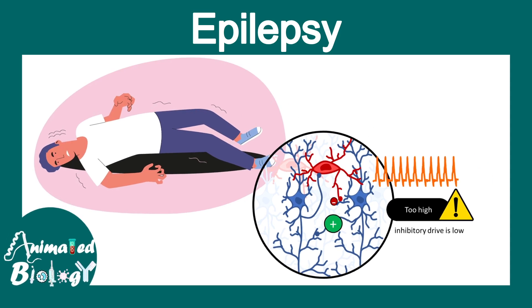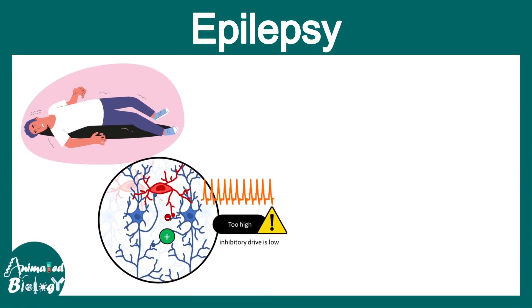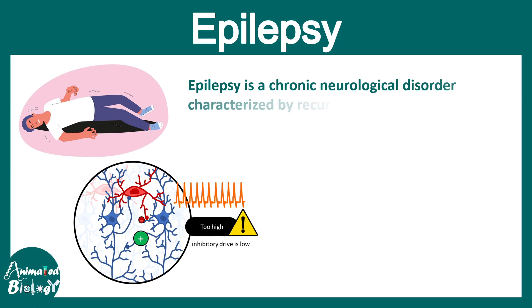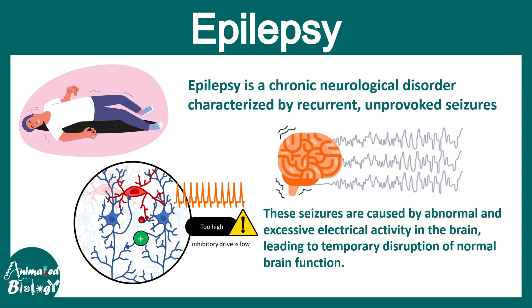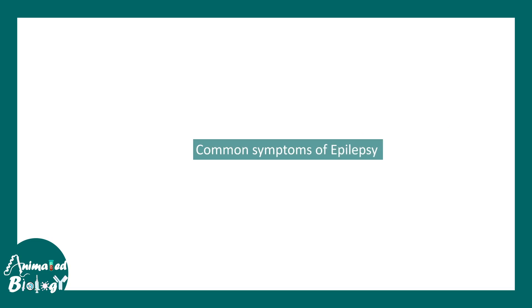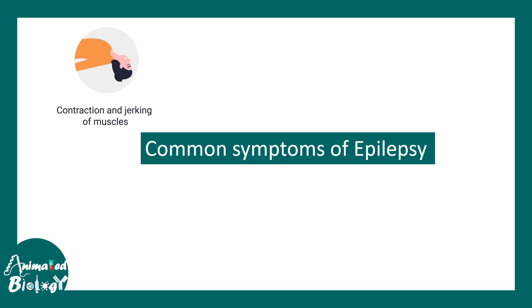In this video we'll be talking about epilepsy. Epilepsy is a neurological disorder characterized by recurrent unprovoked seizures, caused by abnormal excessive electrical activity in the brain, which leads to temporary disruption of the normal functioning of the brain. The quick symptoms of epilepsy involve contraction and jerking of the muscles.